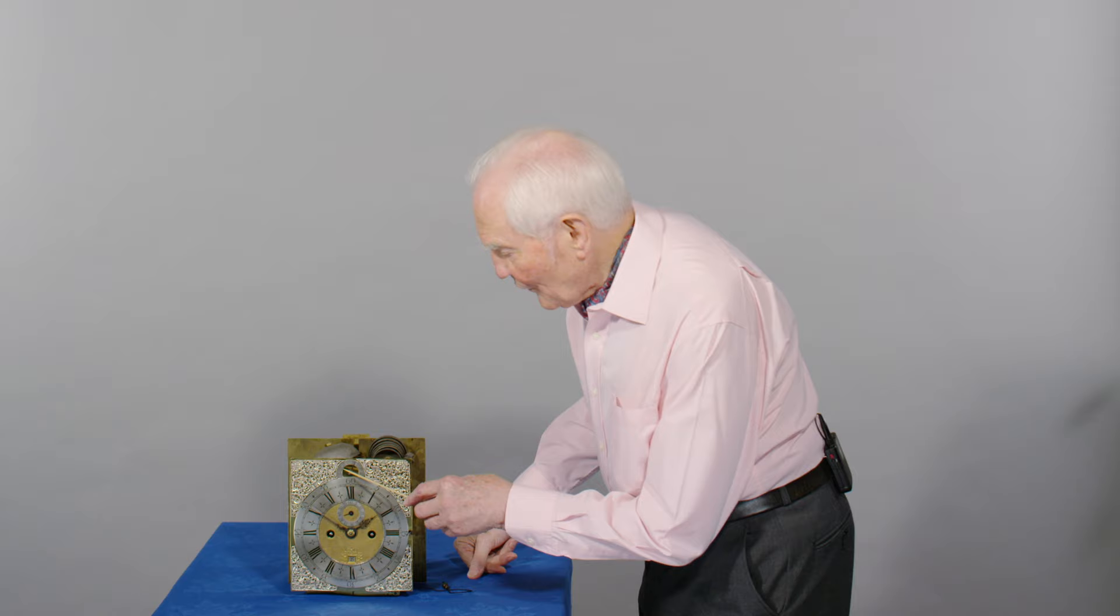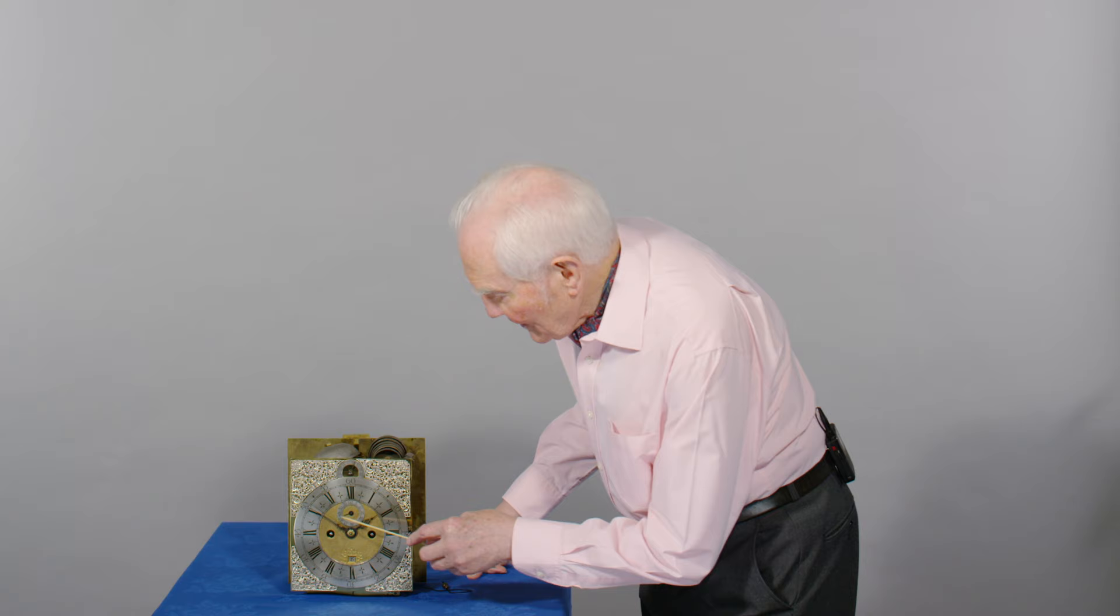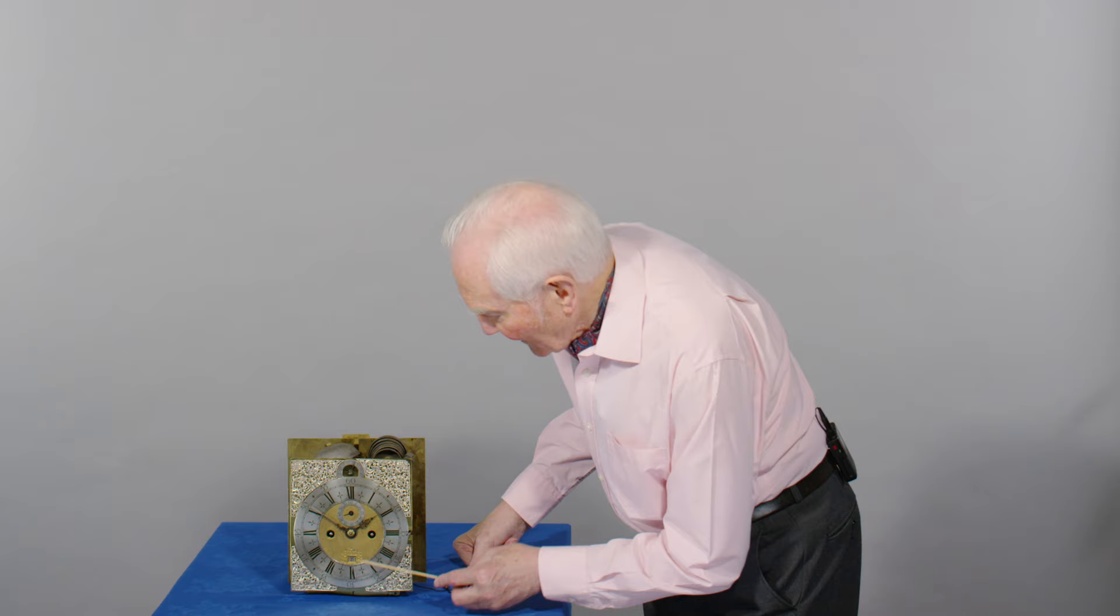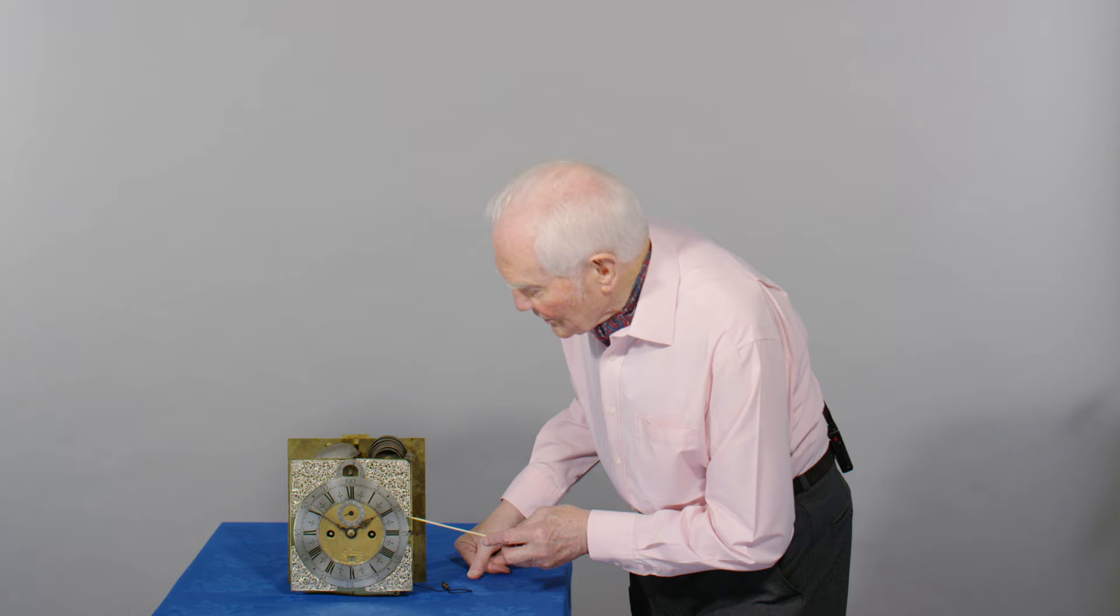I've taken the movement out of the case so that you can see some of the details which we'll give you in close-up later. First of all, the regulation dial here which regulates the height of the pendulum. The seconds dial, which is most unusual on a verge short pendulum clock. You've got the calendar and the strike no-strike switch here so that at night you can turn it off and stop it striking.